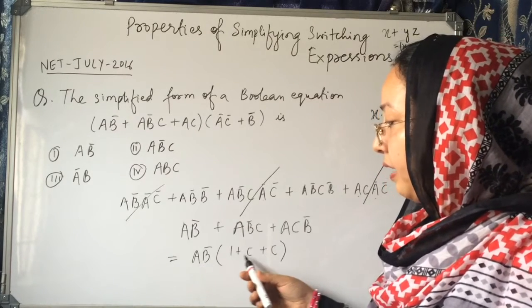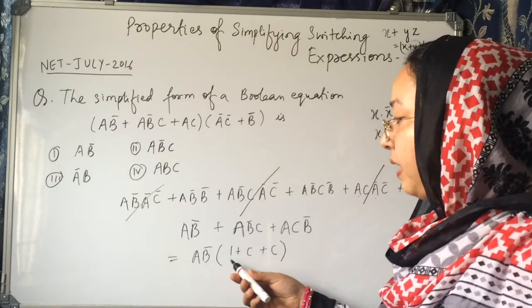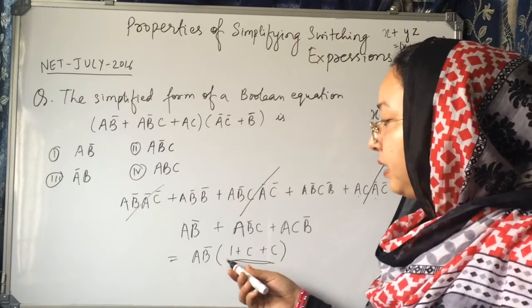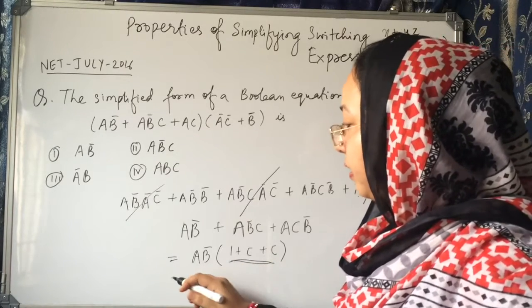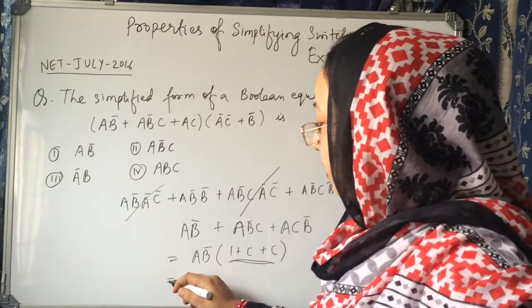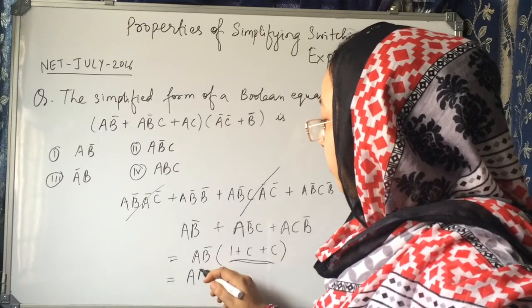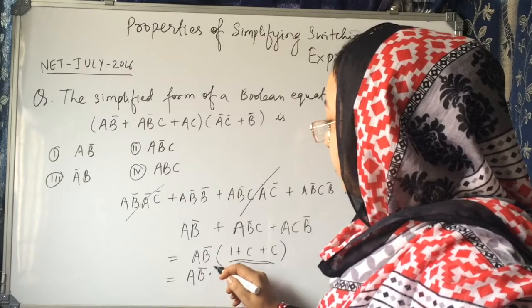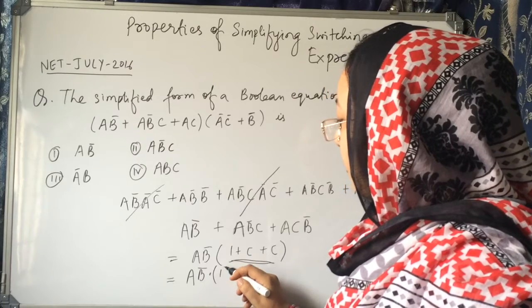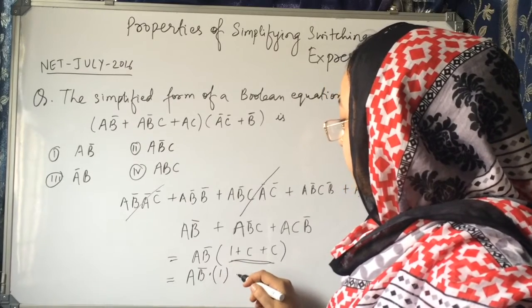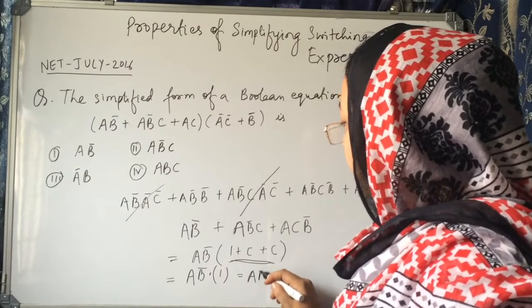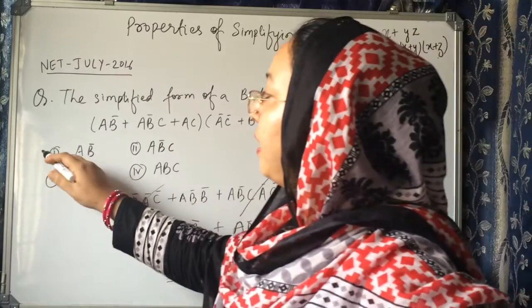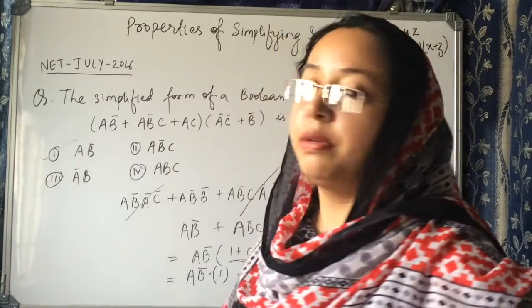We have ab̄ times (1 + ...), and since 1 plus anything remains 1, we can write ab̄ into 1, which gives us ab̄. So the answer is ab̄.